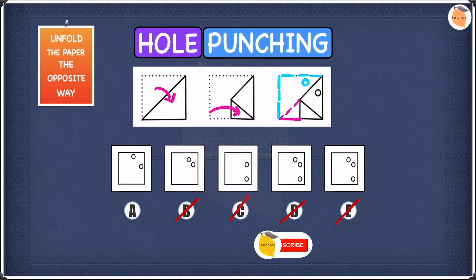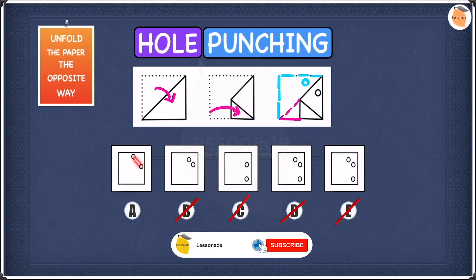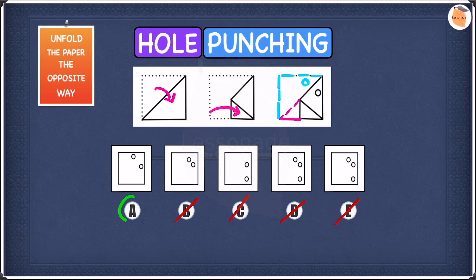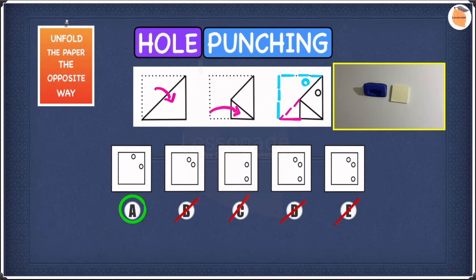So let's check A just to be sure. They have a large gap between them, which is fine, and they're also next to the edge of the paper, which is also fine. So that means our answer to this question is A. I hope you guys understood everything so far.